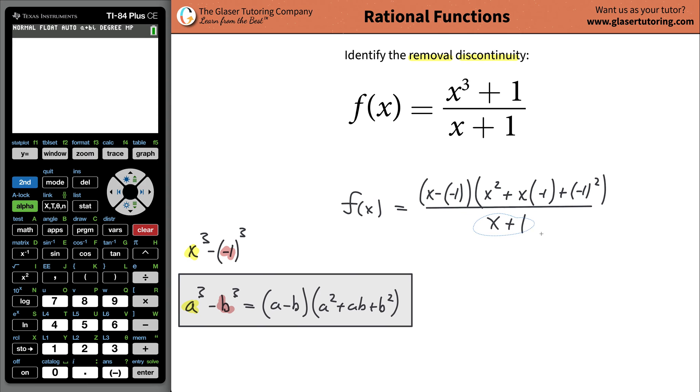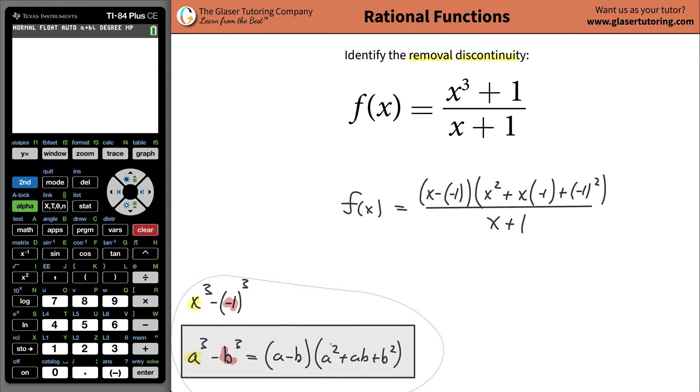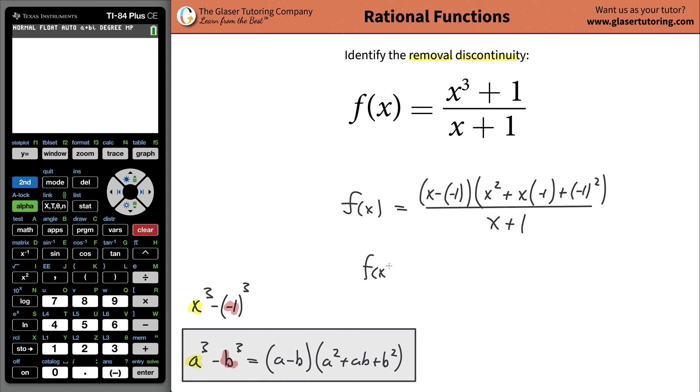So now what I'm going to do is I'm going to clean that up a little bit. Let's move this down out of our way. So now I'm going to clean that up. So this really works out to be x plus 1, and then times, this should be x squared minus x plus 1. And then divide that now by x plus 1.